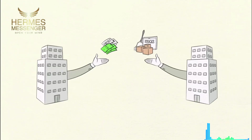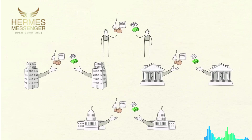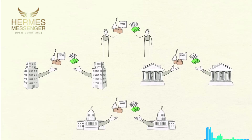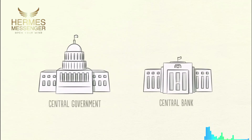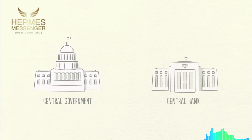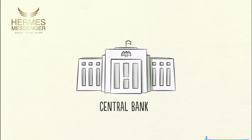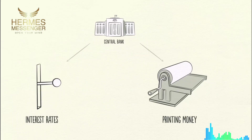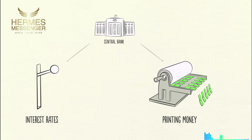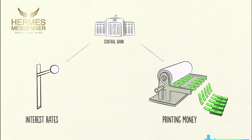People, businesses, banks, and governments all engage in transactions, exchanging money and credit for goods, services, and financial assets. The biggest buyer and seller is the government, which consists of two important parts: a central government that collects taxes and spends money, and a central bank, which is different from other buyers and sellers because it controls the amount of money and credit in the economy. It does this by influencing interest rates and printing new money. For these reasons, the central bank is an important player in the flow of credit.